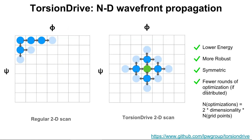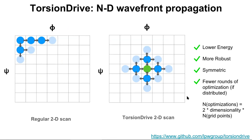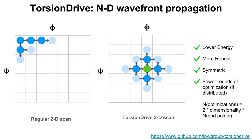If we're running these optimizations in a distributed manner, as QC Archive does, we may actually achieve wavefront propagation results in less wall time, because optimizations are launched in waves. You can end up with a converged result with fewer sets of optimizations compared to the unidirectional case, even though the total number of optimizations is larger — a factor of four in terms of computational cost in this example.